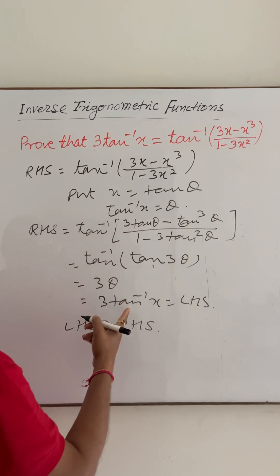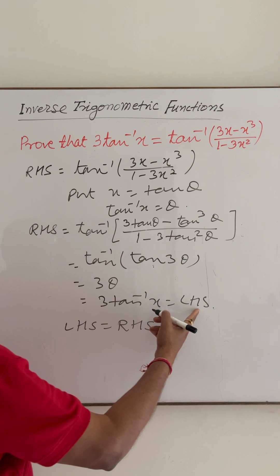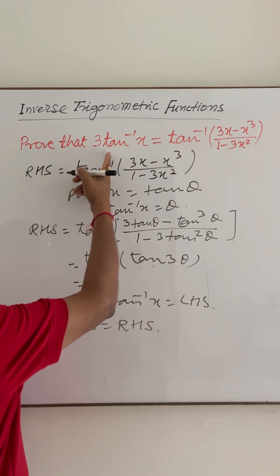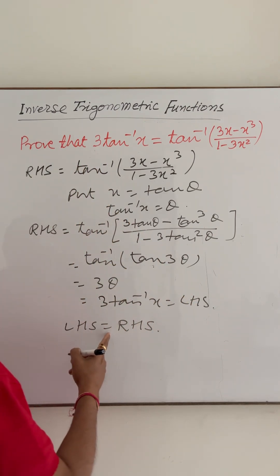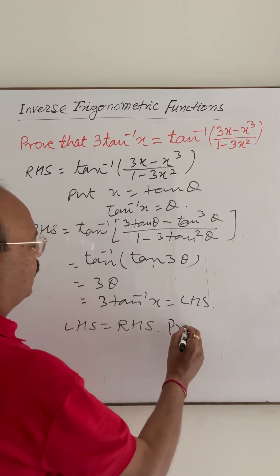Right-hand side value we are getting 3 tan inverse x and left-hand side is already given here 3 tan inverse x. So LHS is equal to RHS. So it has been proved here.